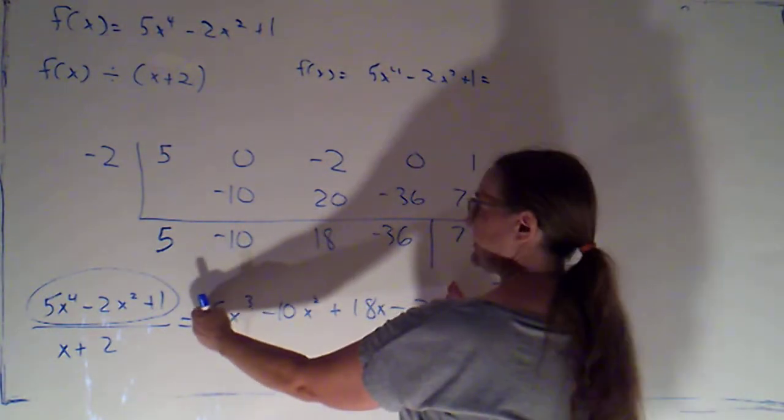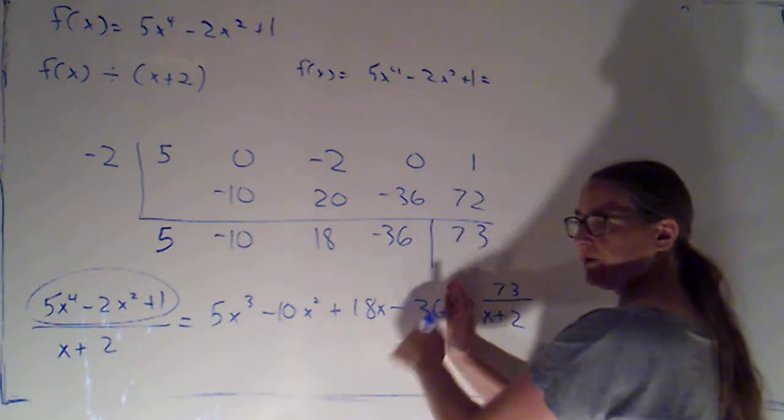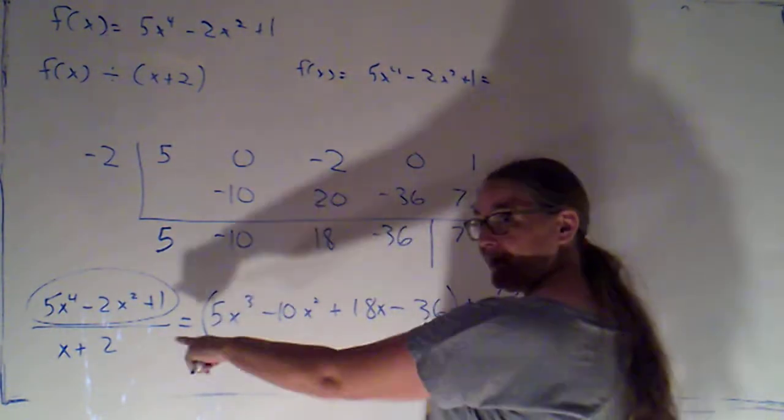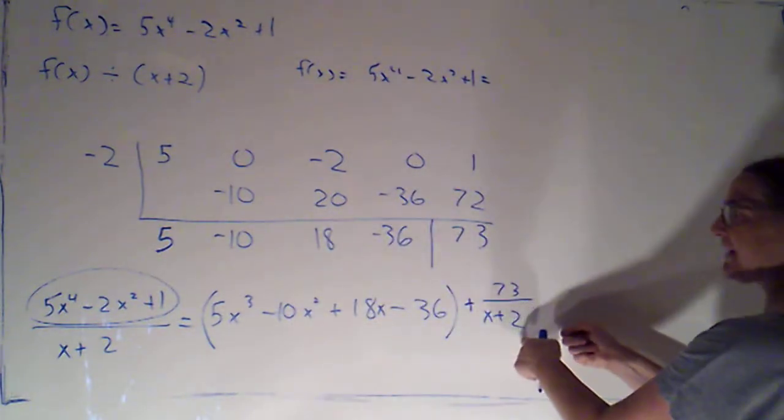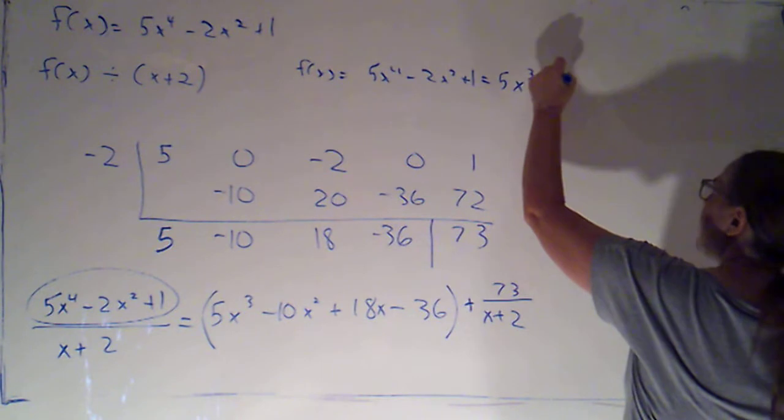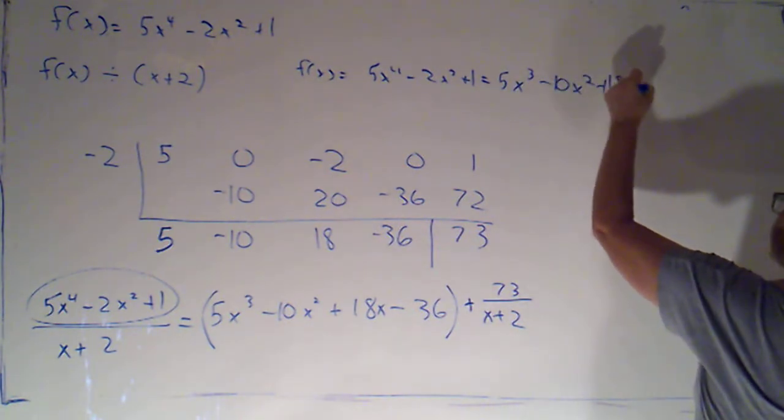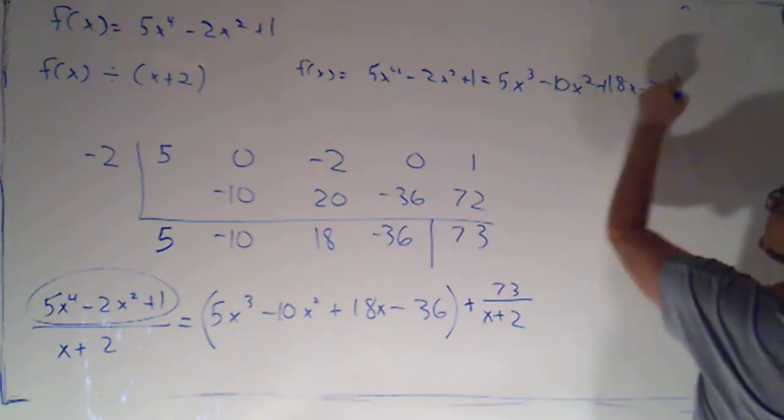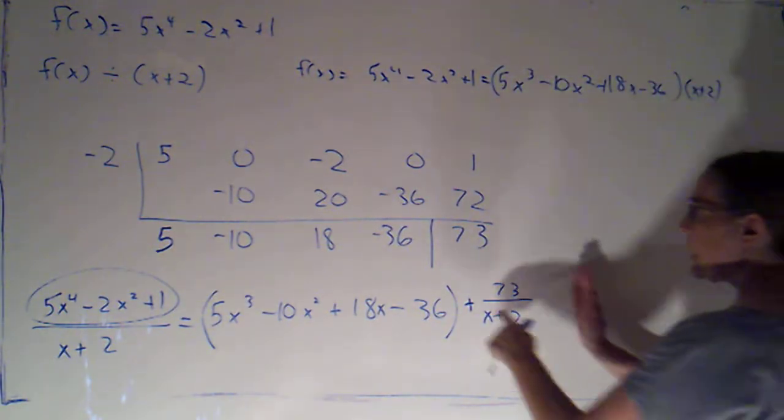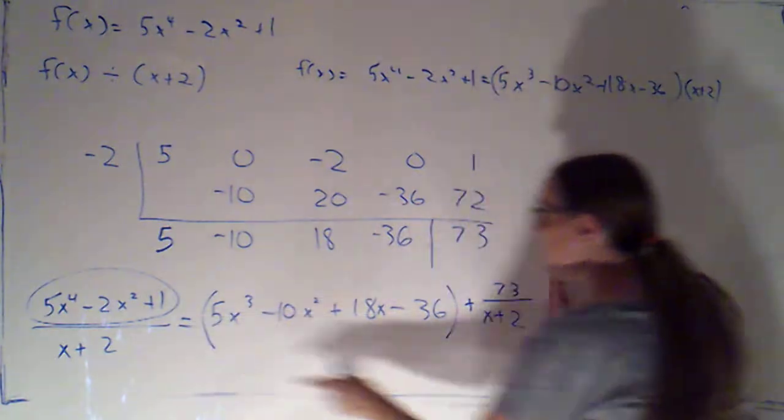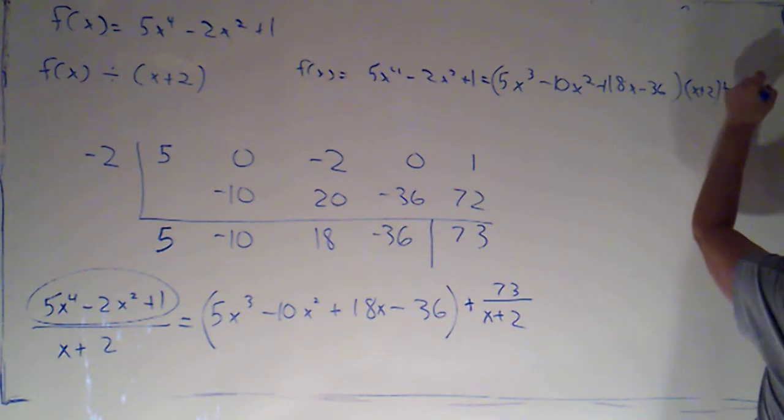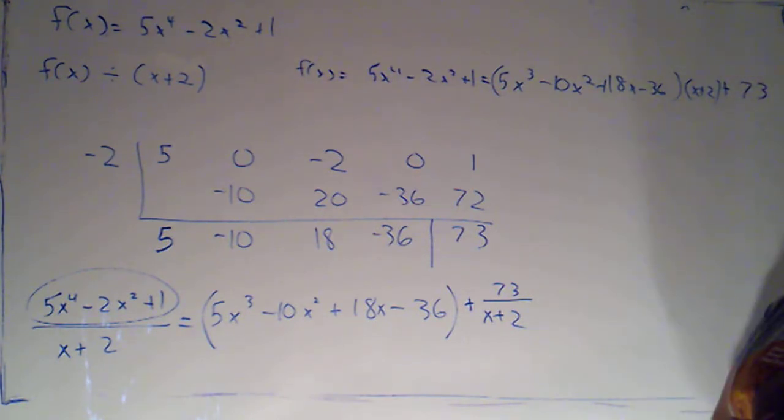Now if I were to multiply by x plus 2 in order to get that out of the denominator, I would have to distribute it. Rather than distributing it to each term separately, I'm going to distribute to each group. I would get 5x cubed minus 10x squared plus 18x minus 36 times x plus 2, plus what I multiplied through by x plus 2. It's going to cancel here. So plus 73.